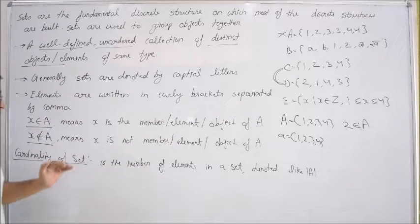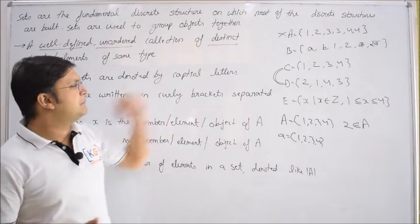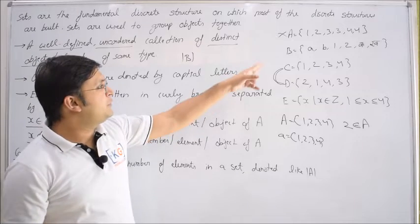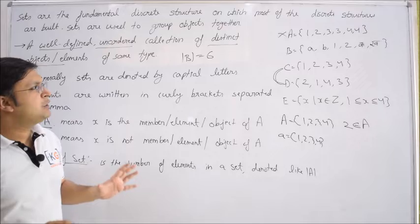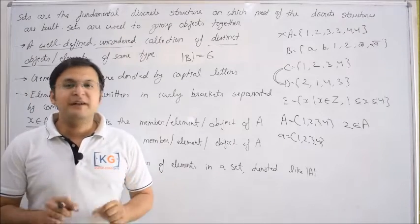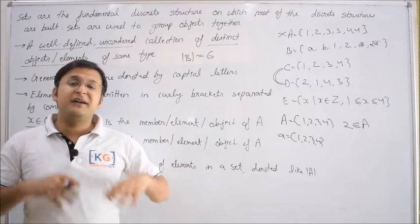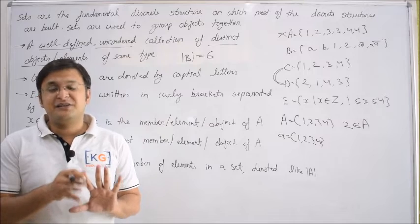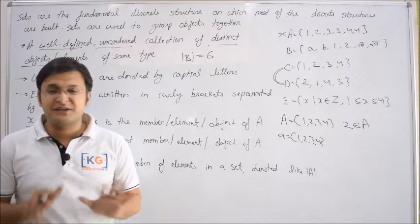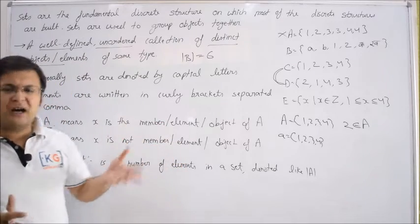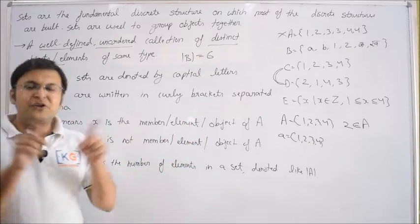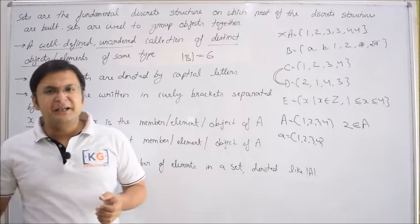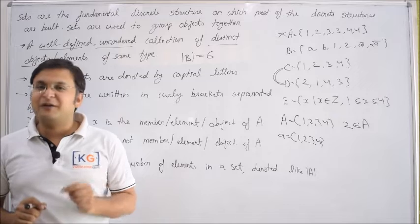The last point: cardinality of a set is the number of elements in the set, denoted by mod (|·|). For example, |B| tells you the number of elements in set B — if B has elements 1, 2, 3, 4, 5, 6, then the cardinality is 6. To conclude: sets are very important structures used to design other structures across many topics. A set is an unordered, distinct collection of elements of the same type. Ordering doesn't matter, elements go in curly braces separated by commas, and we covered membership notation and cardinality. In the later videos, I will continue the discussion of set theory. Thank you.